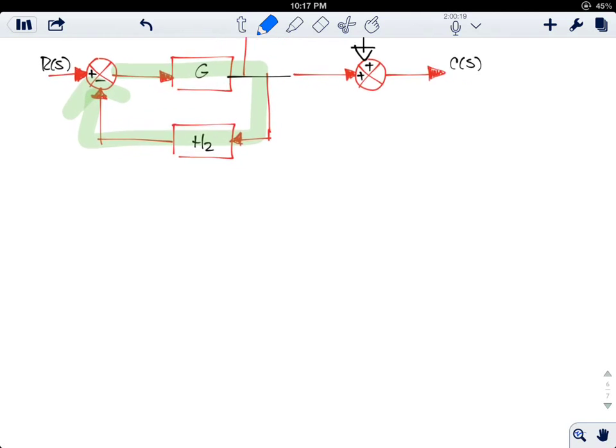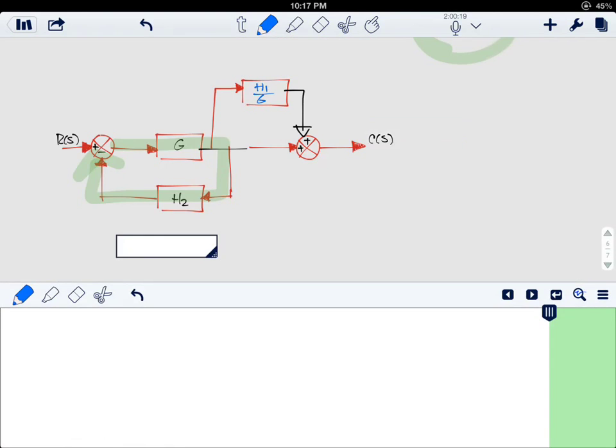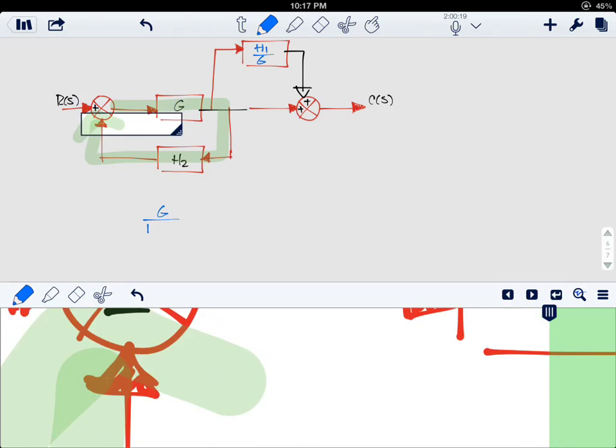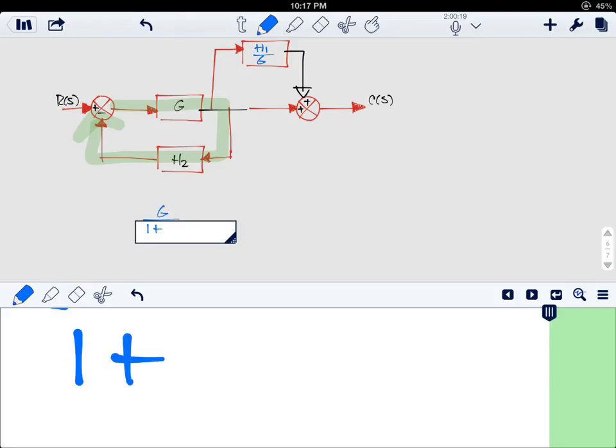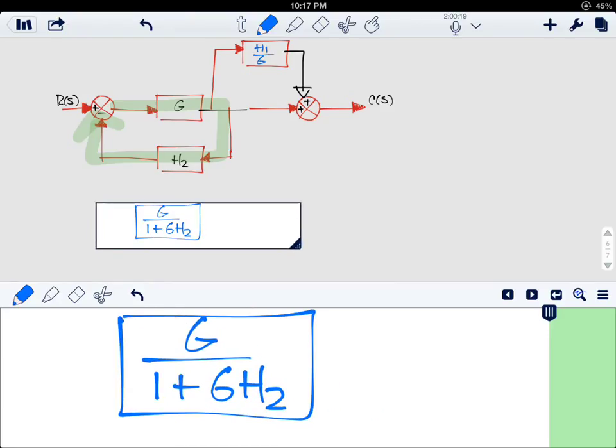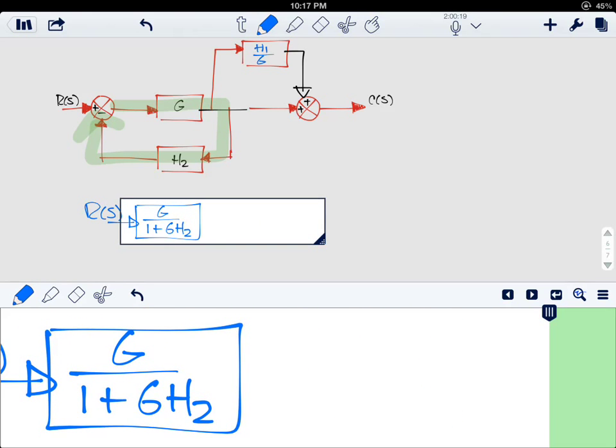So I will have an equivalent: G over 1 plus G times H2 - because it's minus here, I'm going to have a positive here. I still have the same input.